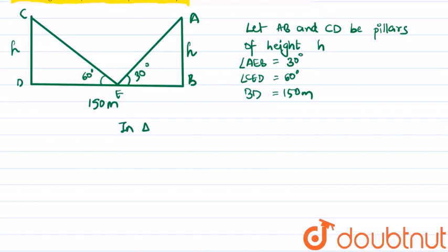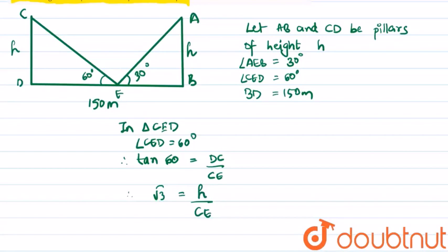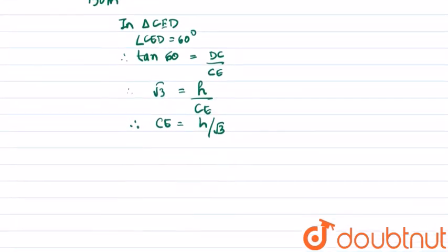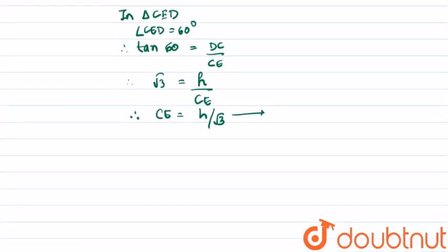Now we can solve. In triangle CED, angle CED equals 60 degrees. Therefore tan 60 equals DC upon CE, which is opposite upon adjacent. That is root 3 equals h upon CE. Therefore CE can be written as h upon root 3. Let us give it as equation 1.